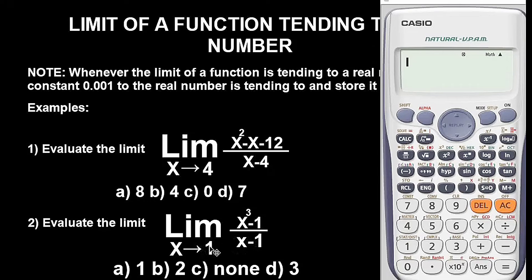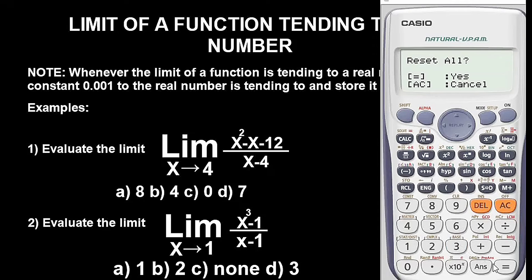To clear the calculator press Shift 9, follow the instruction, press 3, then press equals repeatedly until cleared. Now let's add 0.001 to 1 and store the value we get as x in the calculator.